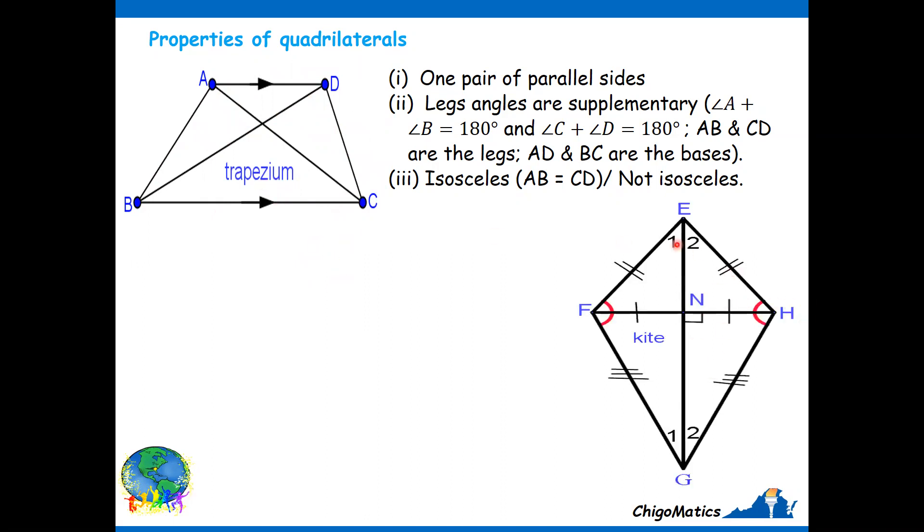Then let's go on to check on the kites. It is a special one. Two pairs of adjacent sides equal. Adjacent simply means they are side by side, or one following the other. So you see that FG and GH are adjacent sides. Therefore, they are equal. Then again, you will see that FE and EH are adjacent sides. Hence, they are equal.